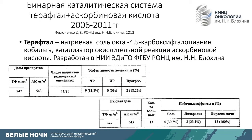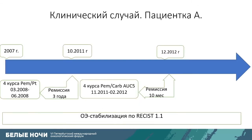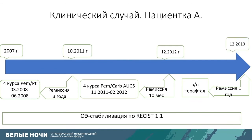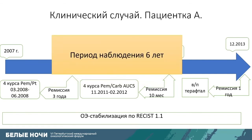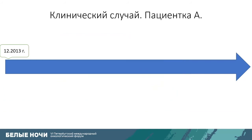The patient was included in a clinical trial to test a local drug called teraftal — a complex cobalt compound introduced directly into the pleura. The dose is 247 mg/m² in combination with ascorbic acid at 543 mg/m². The drug showed high efficacy, controlling pleuritis in 80% of patients. After teraftal, remission lasted one year, with progression in December 2013. The best effect was stabilization. By that point, the follow-up period totaled six years.